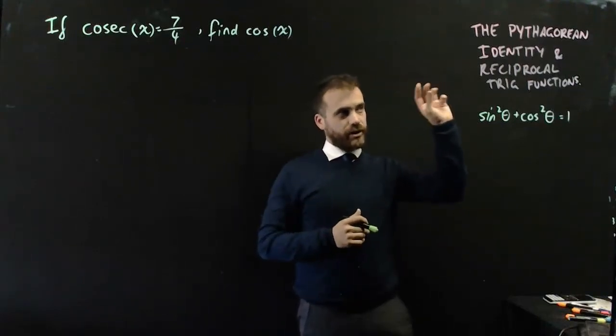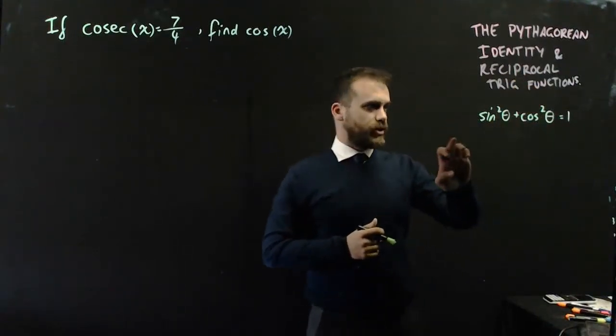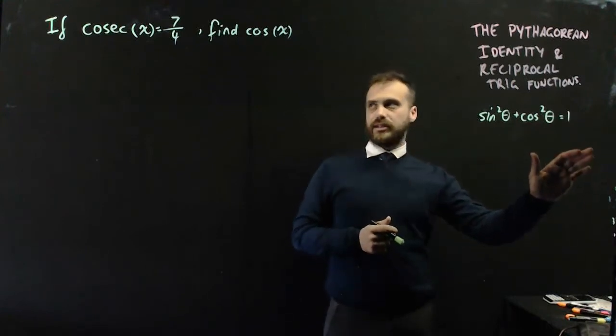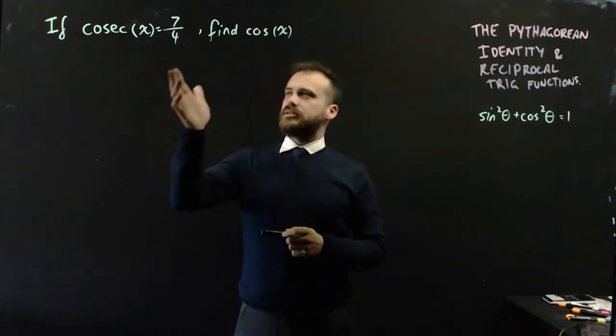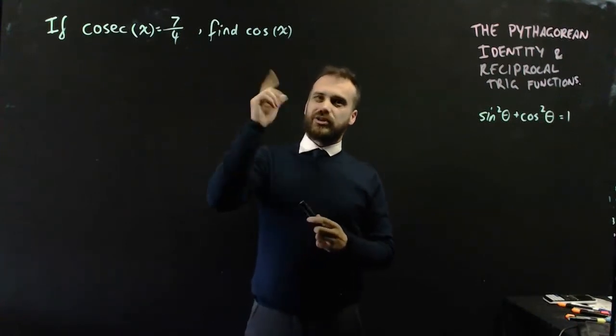Bringing two ideas together: the Pythagorean identity and reciprocal trig functions. So there's the Pythagorean identity. Let's use it to solve something like this. If cosec x equals 7 on 4, find cos x.